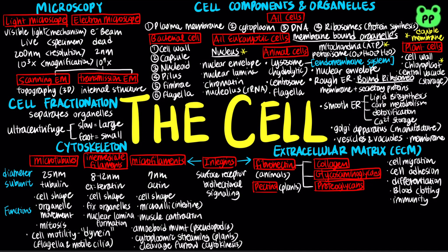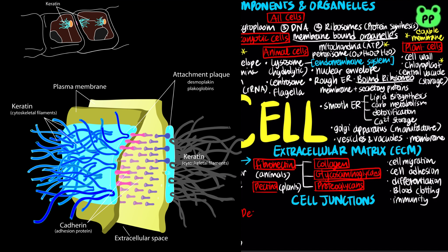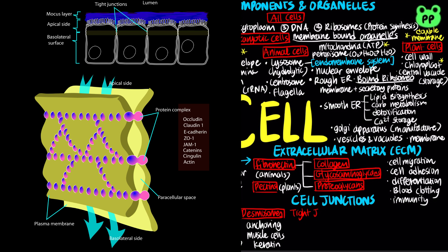Neighboring cells in tissues, organs, or organ systems are often connected through intercellular junctions. There are three main types of cell junctions in animal cells. Desmosomes are anchoring junctions that fasten cells together in strong sheets. Intermediate filaments made of keratin anchor desmosomes in the cytoplasm, and they are found in muscle cells to provide tensile strength during stretching. At tight junctions, membranes of neighboring cells are pressed together, preventing leakage of extracellular fluid. They are typically found in epithelial cells that provide a watertight environment.